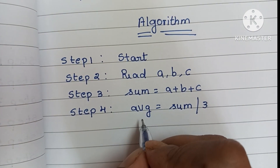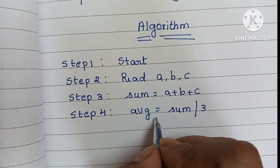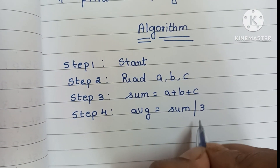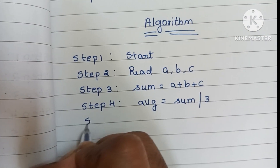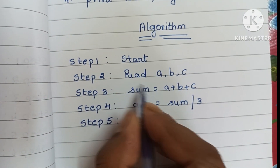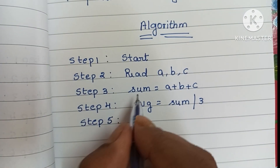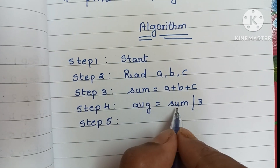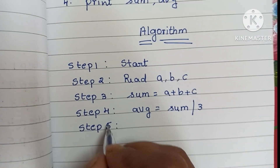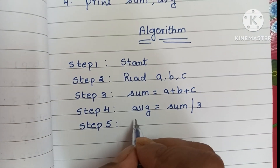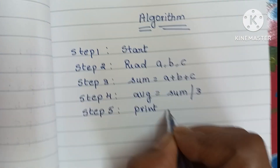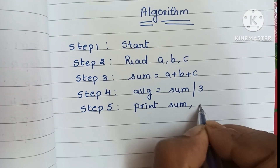The formula to find the average of three numbers is: average equals sum divided by 3. In step five, we have to print the output values — that is sum and average.